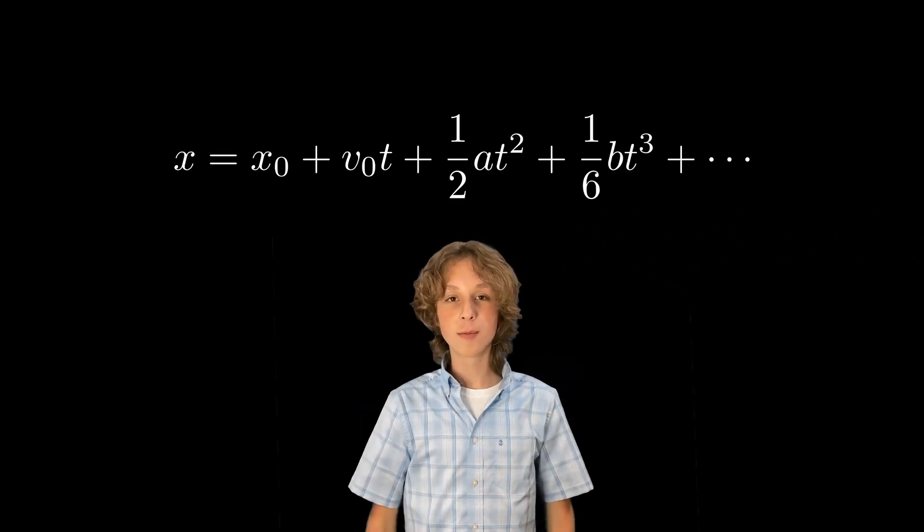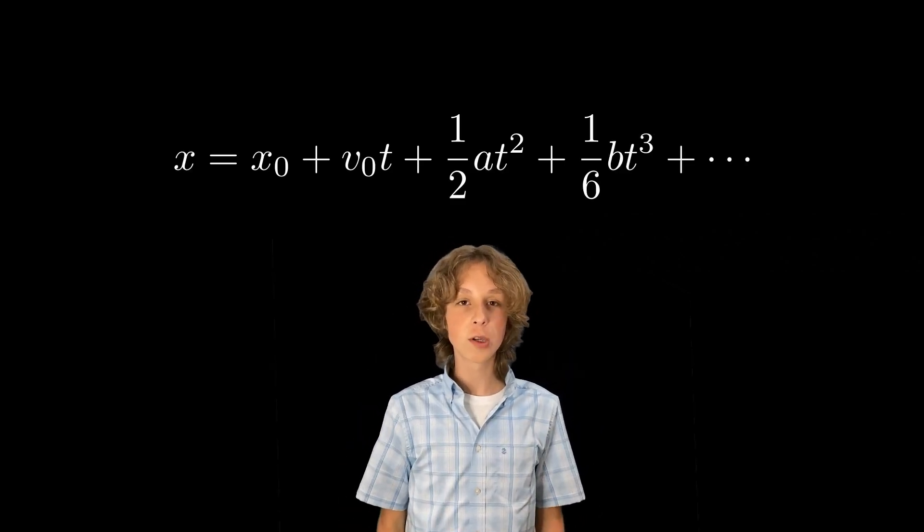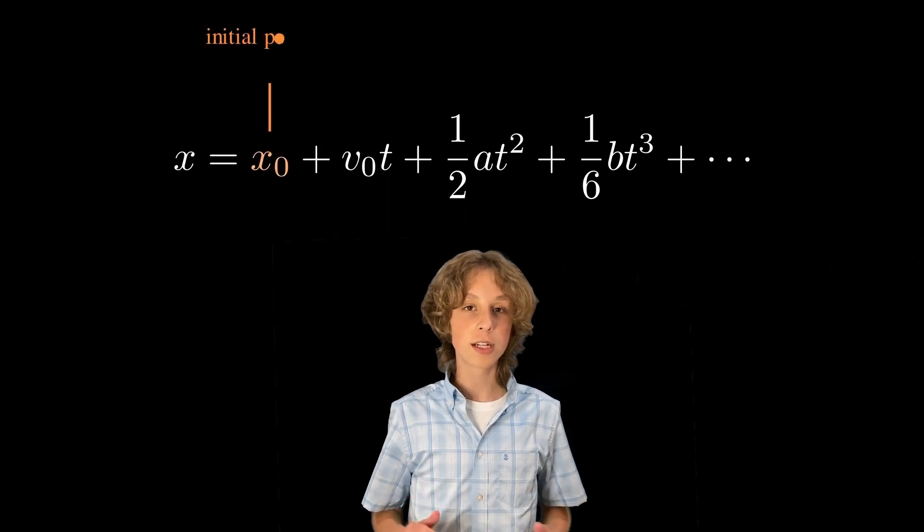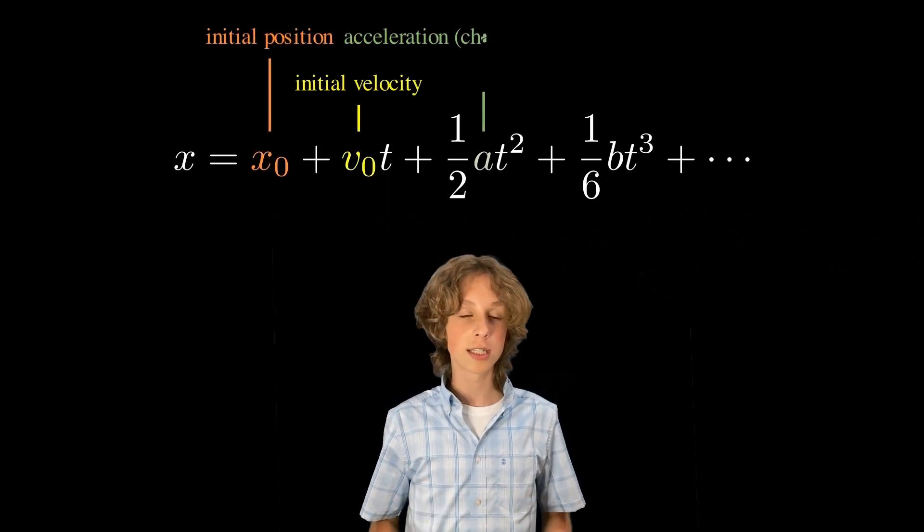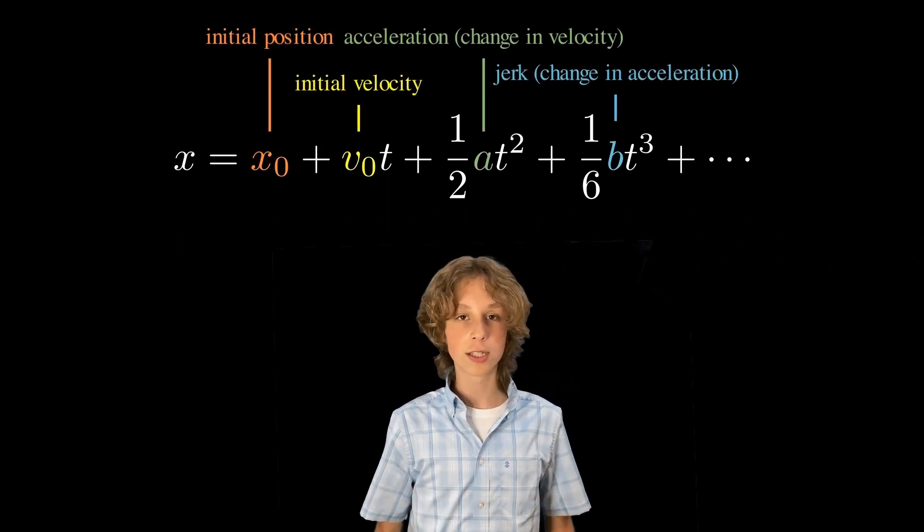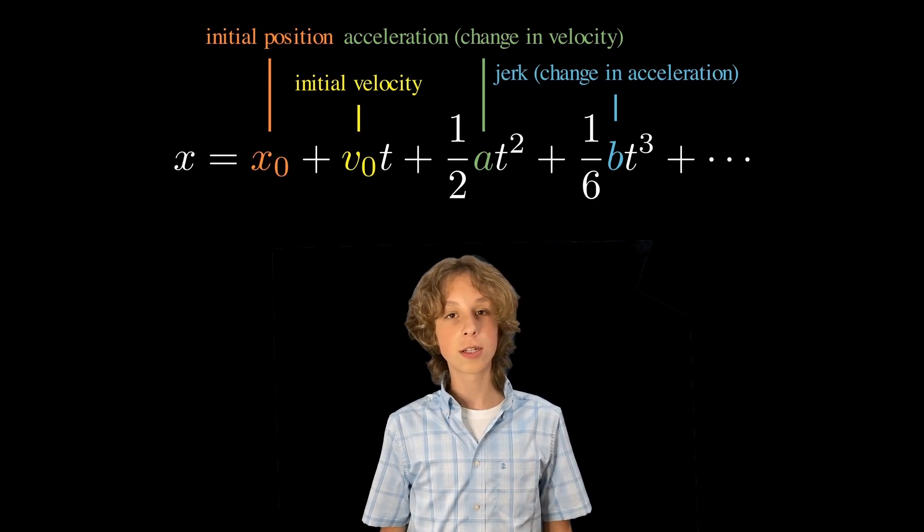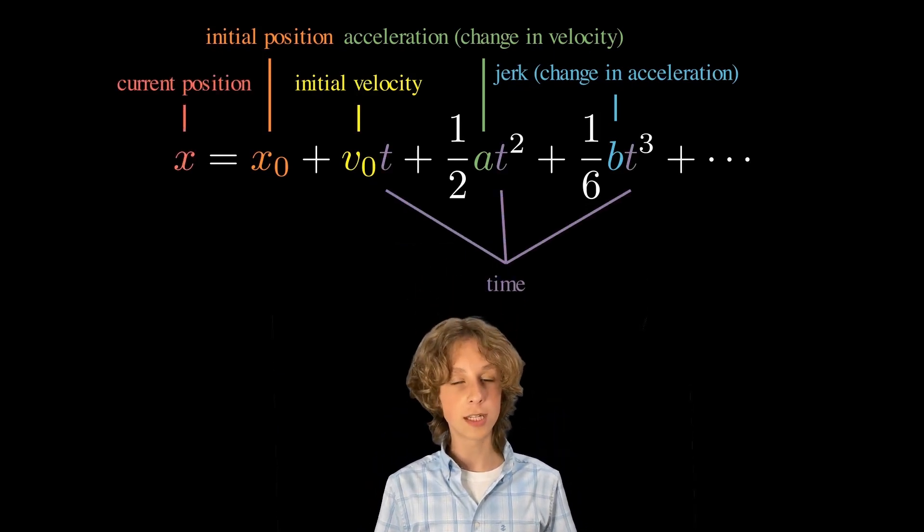This is an equation which governs the motion of objects in the real world. The first few terms take in the vectors of initial position, initial velocity, acceleration, and jerk, which is change in acceleration. The equation calculates the current position as a function of the time, t.